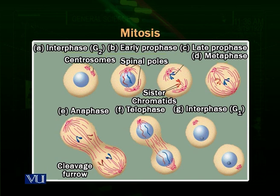In telophase, you can see that the chromosomes reach their destination. They start thinning again and the nuclear membrane starts forming. In the next phase, you can see that the cell is divided into two daughter cells. Now we look at all of these stages in detail.